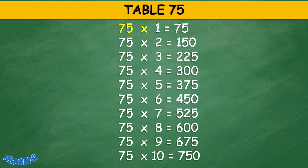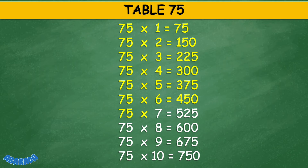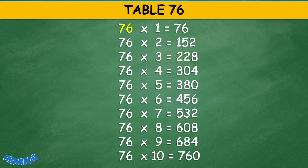Table 75: 75 times 1 equals 75, 75 times 2 equals 150, 75 times 3 equals 225, 75 times 4 equals 300, 75 times 5 equals 375, 75 times 6 — 75 times 8 equals 600, 75 times 9 equals 675, 75 times 10 equals 750.